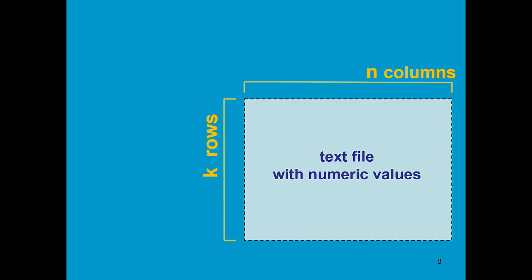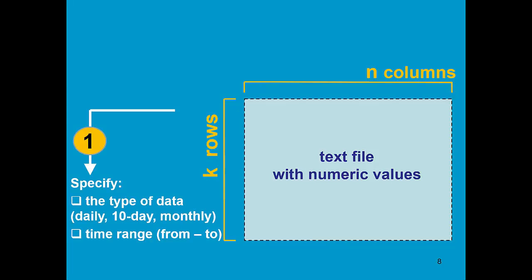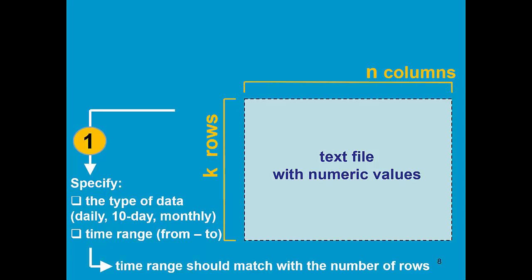So in our import directory, we have a text file with numerical values. Step number 1 consists in specifying what is the type of data — daily, 10-day, or monthly — and what is the time range, from what day to what day. If that is done correctly, then the time range should match with the number of rows.